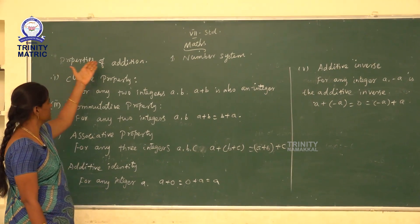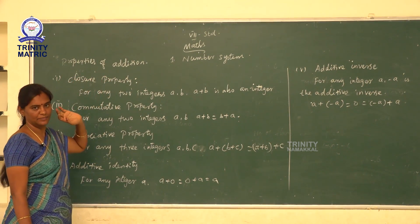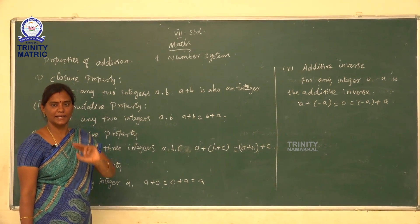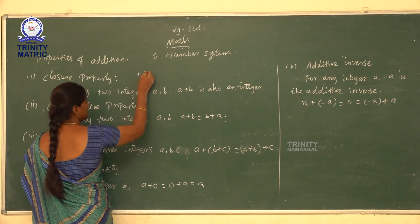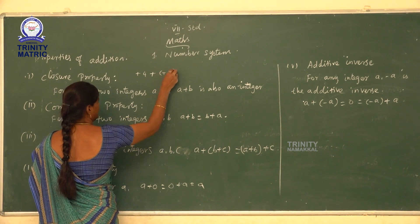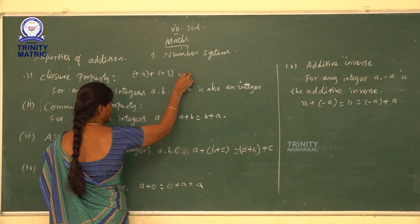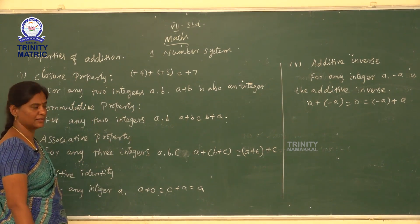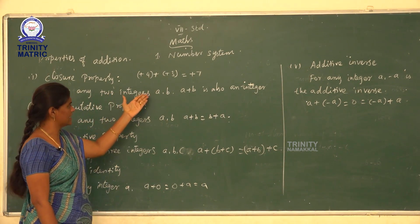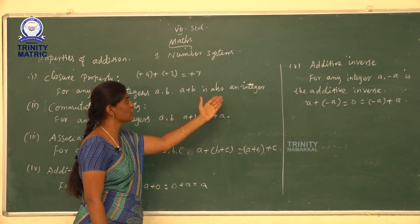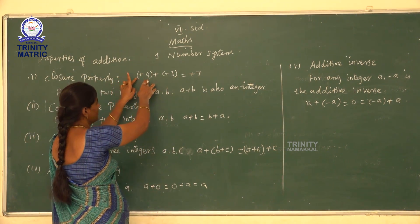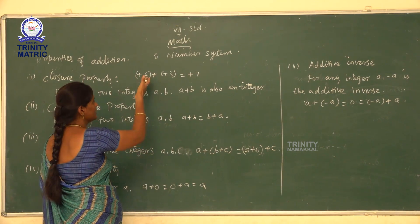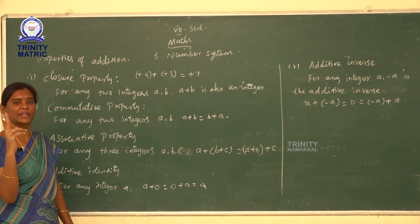Properties of addition of integers. First is closure property: the sum of two integers is an integer. For example, plus 4 plus plus 3 — we add these two integers and again get an integer. In general form, for any two integers a, b: a plus b is also an integer. This is the closure property.